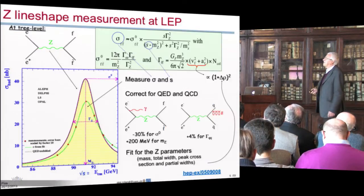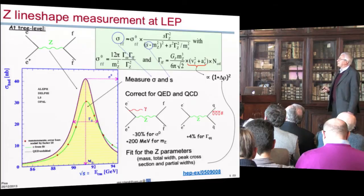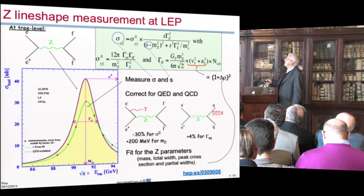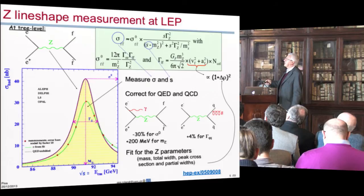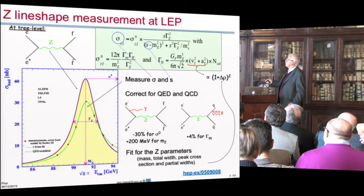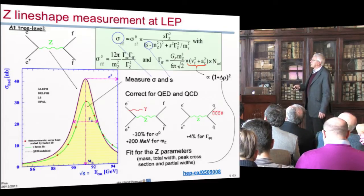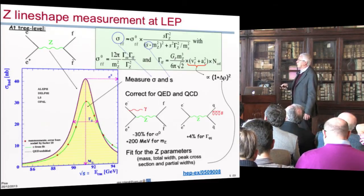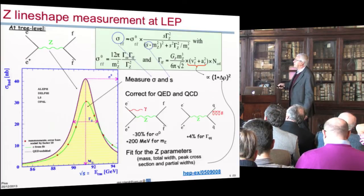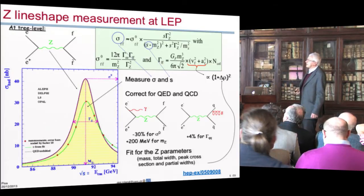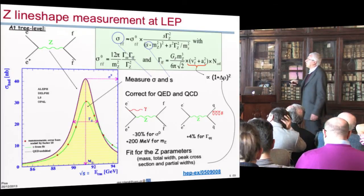Let me start with the Z-lineshape measurement at LEP. The measurement is conceptually straightforward. You measure the total cross-section, the cross-section in a given final state as a function of the center of mass energy. So you change the beam energy and you measure the cross-section. The measurements are reported here. Here is the square root of s, twice the beam energy.